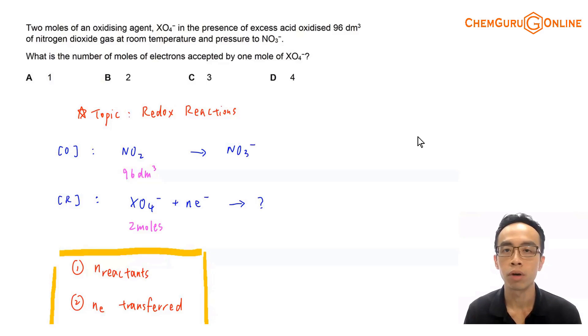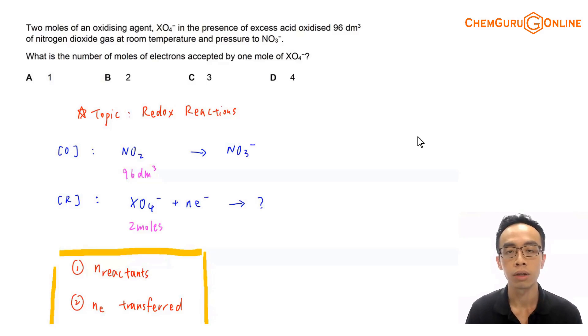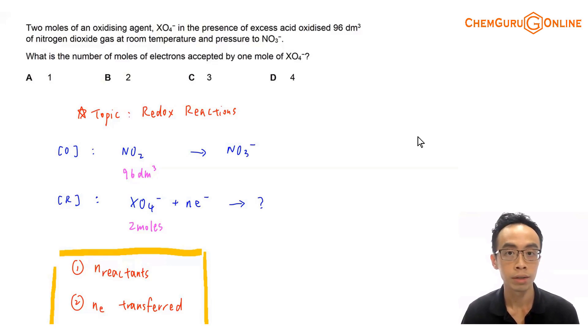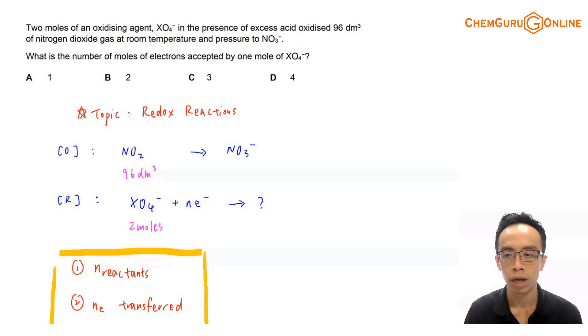Hi everyone, this is Maverick Pott, the chemistry guru. Now in this video, we want to discuss a redox reaction question comparing the mole ratio of electron to oxidizing agent. So let us take a look at this question.